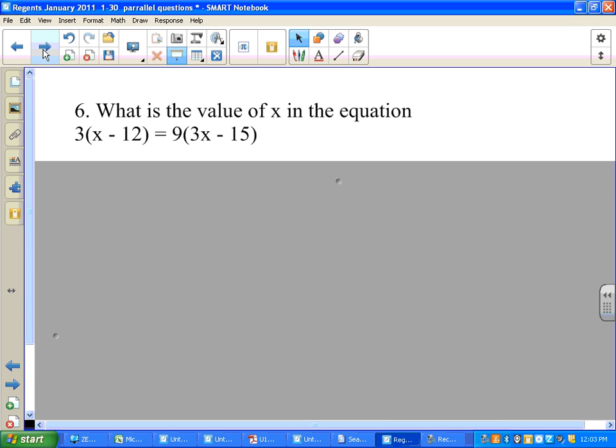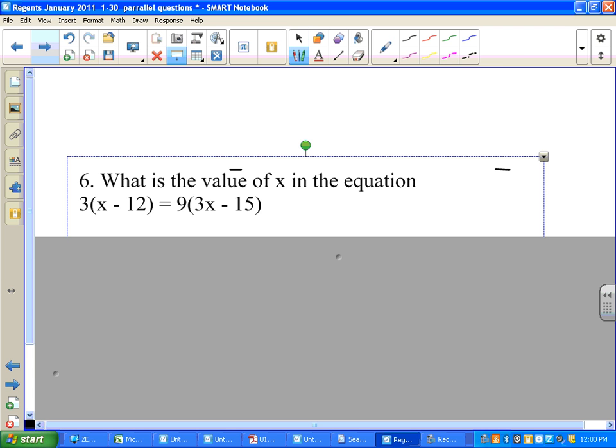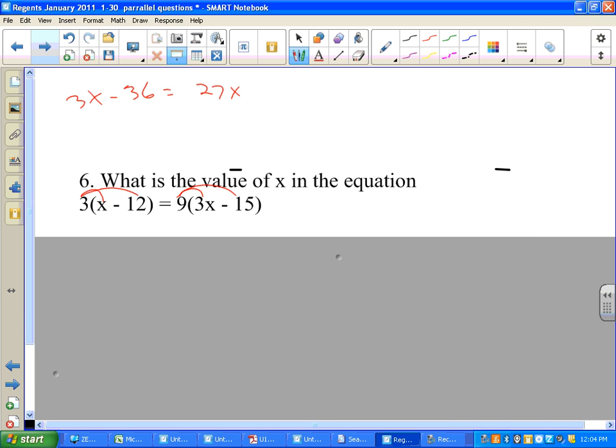What's the value of x in this equation? Again, very straightforward. Getting myself a little room so that I can do the work. I distribute 3 times x, 3 times negative 12 is 3x minus 36. Distribute 3 times 9 is 27x. 9 times 15 is minus 135. I need to find the value of x in the equation. That means isolate x. Personally, I like to subtract the smaller x's.